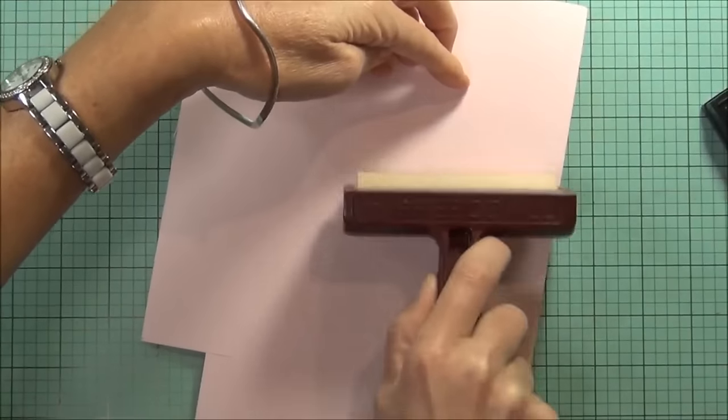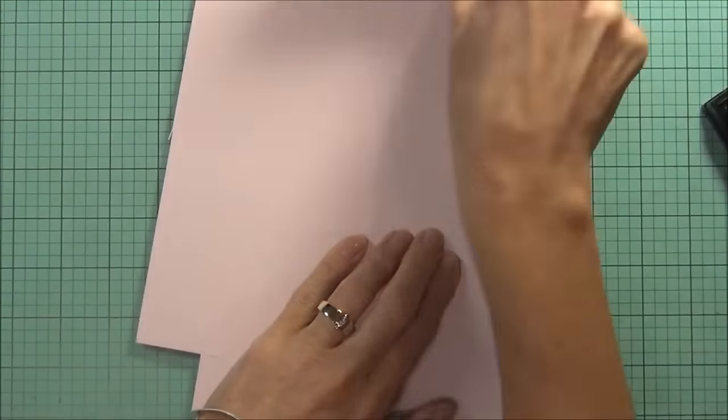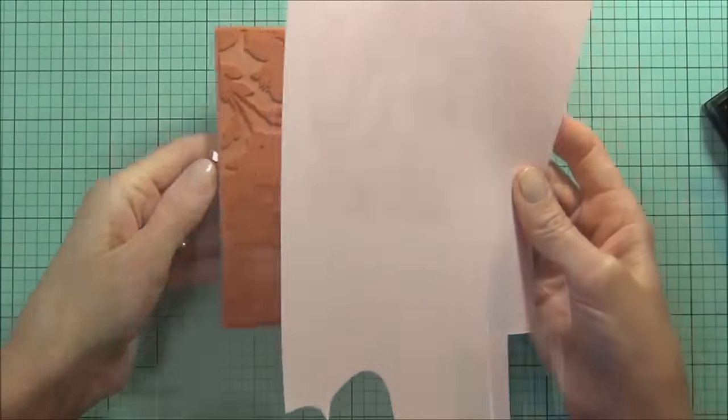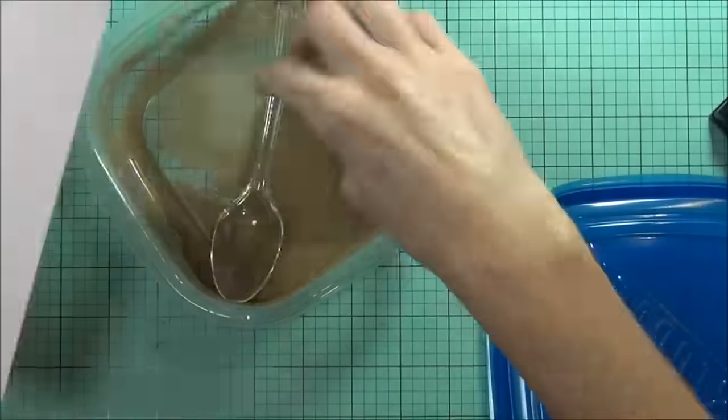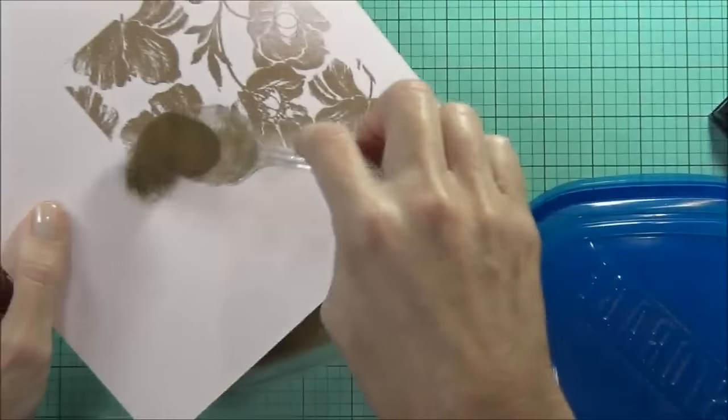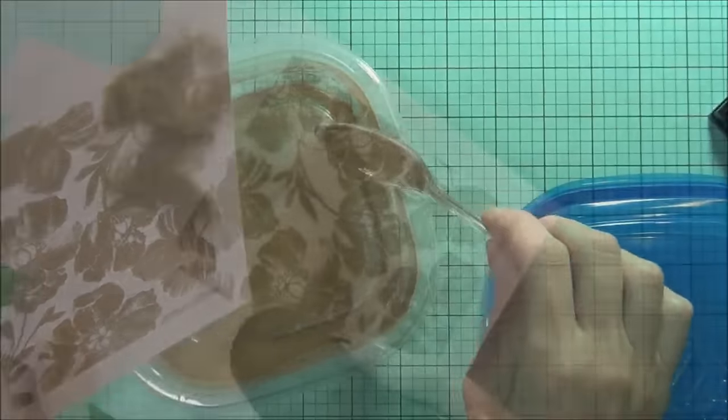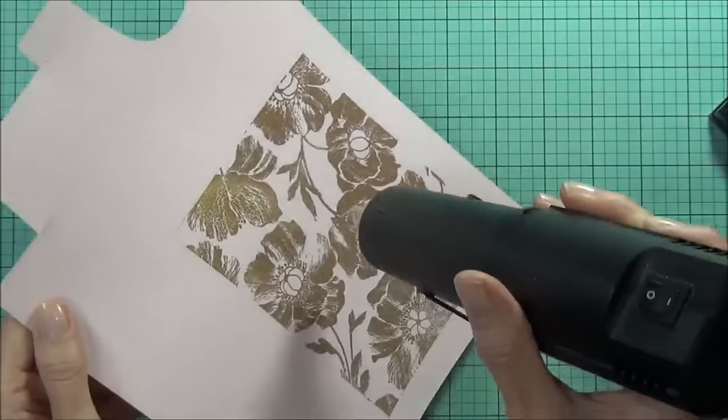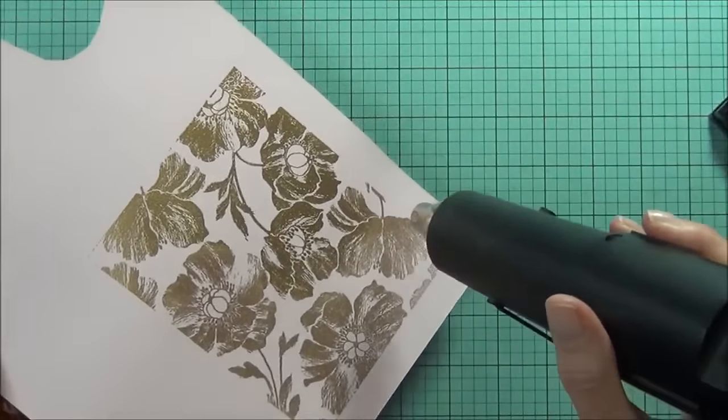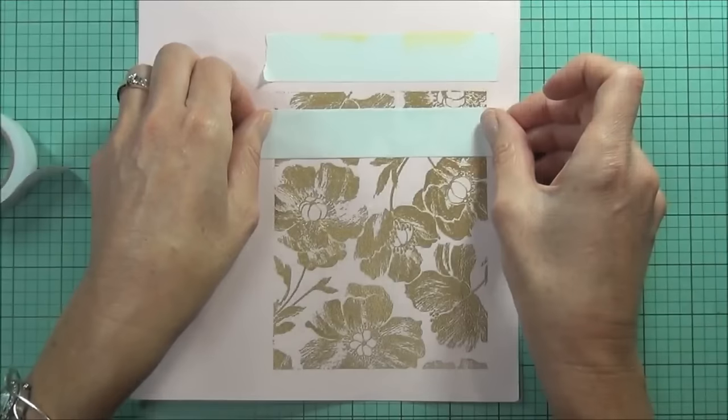I've got the Wow gold embossing powder. This is a really pretty color and I like the way that it doesn't leave lots of stray bits of embossing powder around. When I heat it, it melts so beautifully. I'm working on a pale pink cardstock, I think it's a Bazzill one.